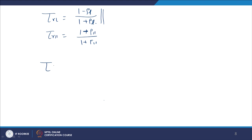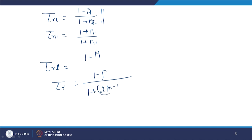For a multi-layer system with m layers of glass, the transmissivity becomes τ_r = (1 − ρ)/(1 + (2m − 1)ρ), where m is the number of layers.